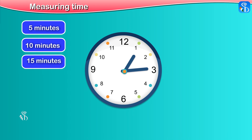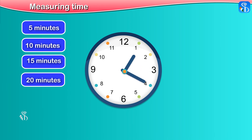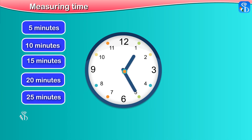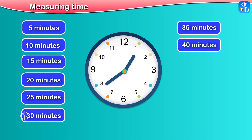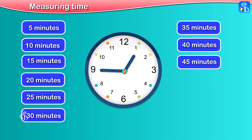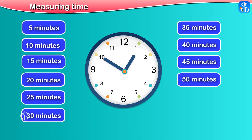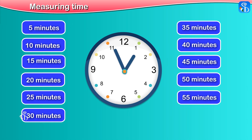When the minute hand is at 3, it indicates 15 minutes. At 4 it indicates 20 minutes, at 5 it indicates 25 minutes, at 6 it indicates 30 minutes, at 7 it indicates 35 minutes, at 8 it indicates 40 minutes, at 9 it indicates 45 minutes, at 10 it indicates 50 minutes, at 11 it indicates 55 minutes, and at 12 it indicates 60 minutes.